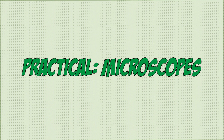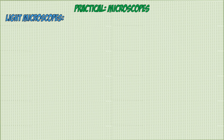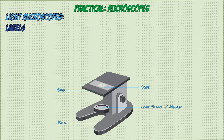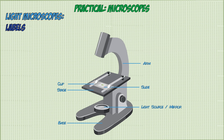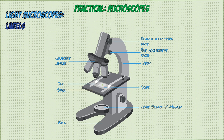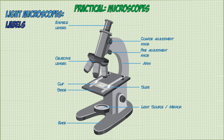Now let's look at the practical you're expected to know. Light microscopes are used in school as they're smaller and easier to use. They have a light source or mirror to illuminate the specimen. Above that is the stage where you clip the slide in place. An arm holds the coarse adjustment knob and fine adjustment knob, used to focus the image. Below the knobs are the objective lenses — usually three, each with a different magnification power. Above the knobs is the eyepiece lens, which you look through and which has a fixed magnification.